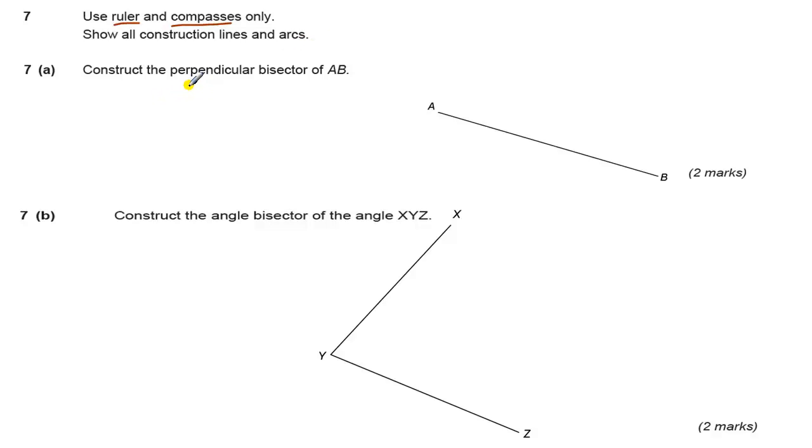The first thing we have to do is construct a perpendicular bisector of A and B. Another thing we might be asked to do here is to construct all the points that are equidistant from A and B.